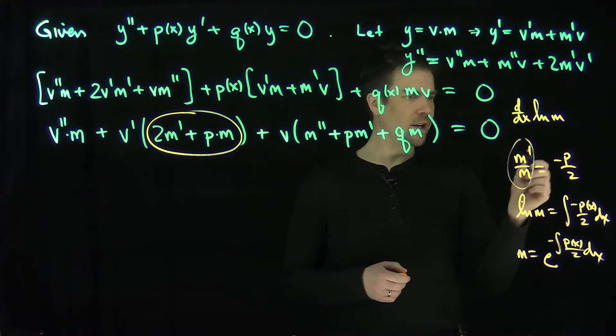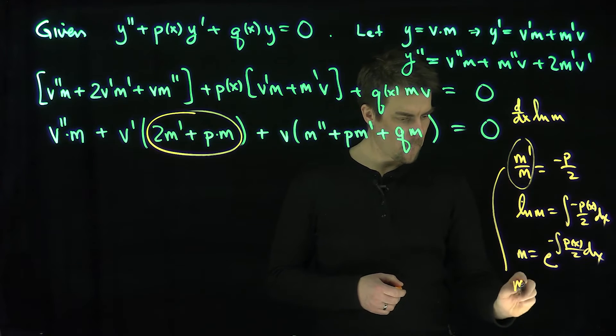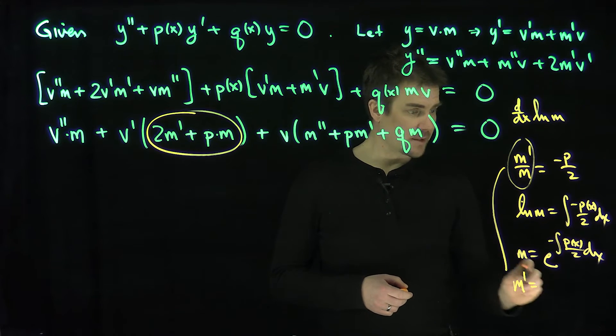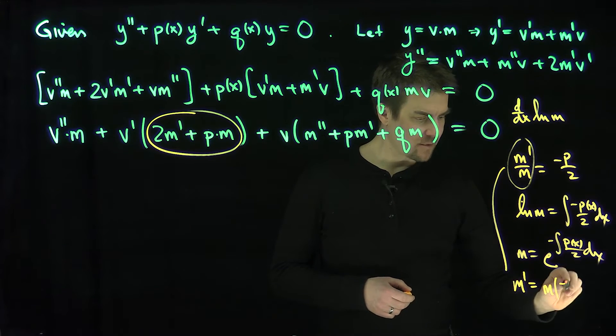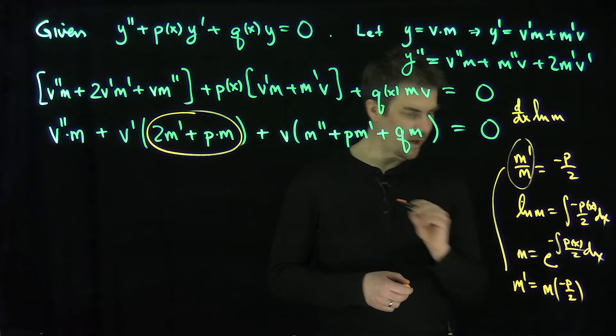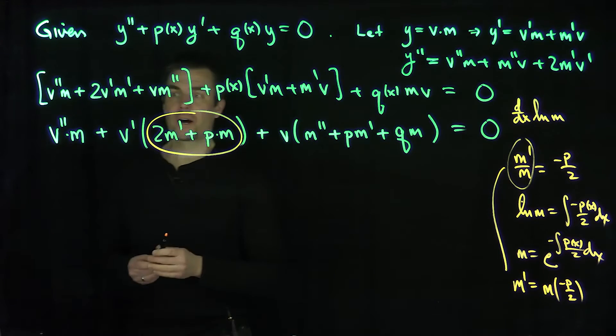All right. So in particular, this says that m prime is going to be what? It's going to be m times negative p over 2. Great.